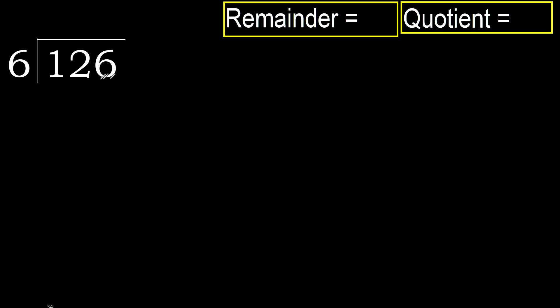126 divided by 6. 1 is less, therefore next. 12 is not less, therefore with 12, 6 multiplied by which number is nearest to 12.